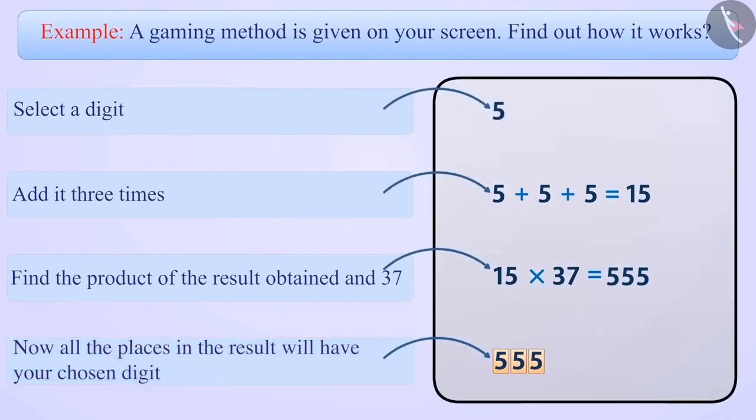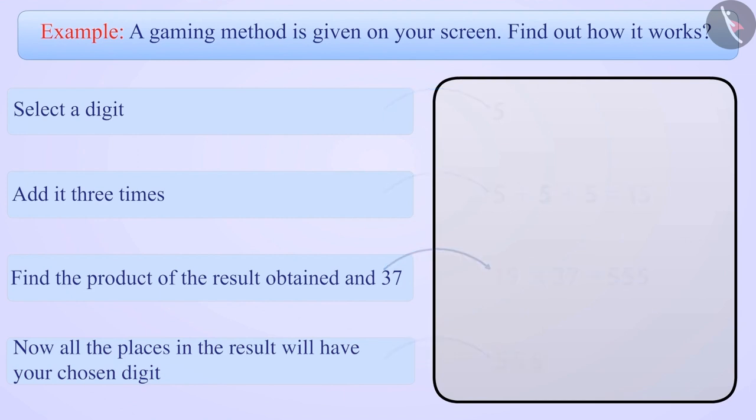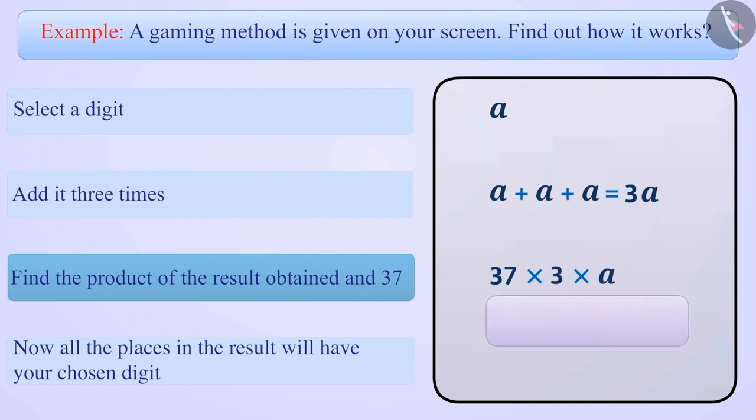Now let's understand how this method works. Suppose we chose a number a. To add it three times, we will write a plus a plus a, which equals 3a. Now we multiply this with 37. 37 into 3a, or we can write 37 into 3 into a, using the associative property of multiplication.